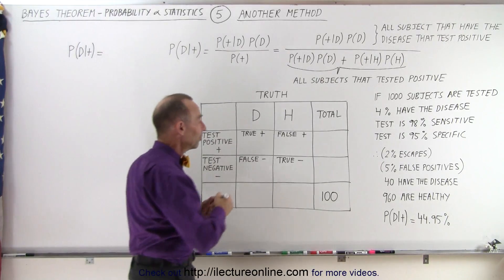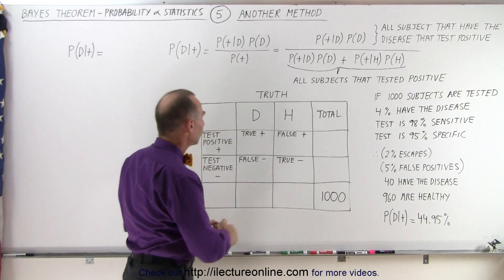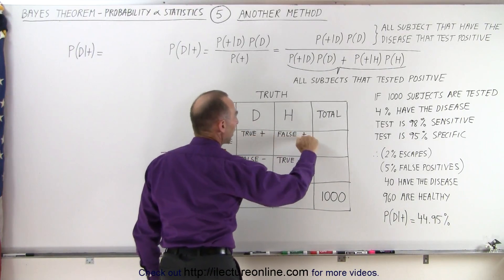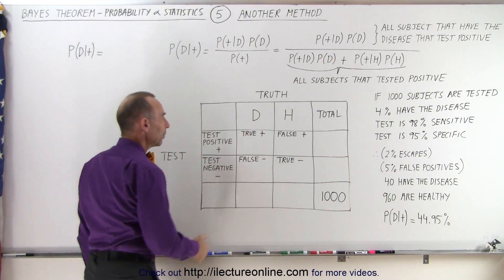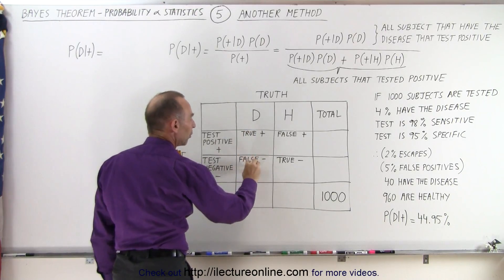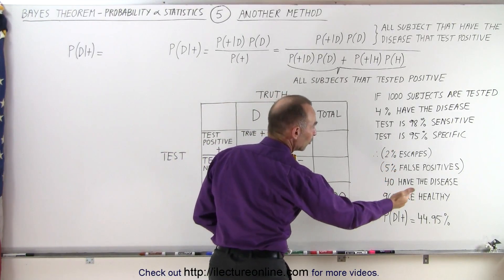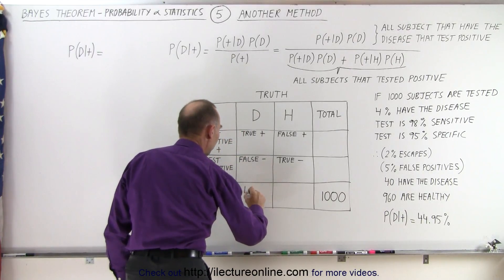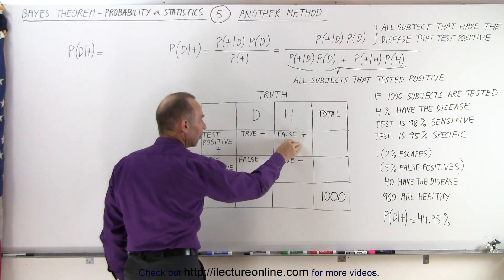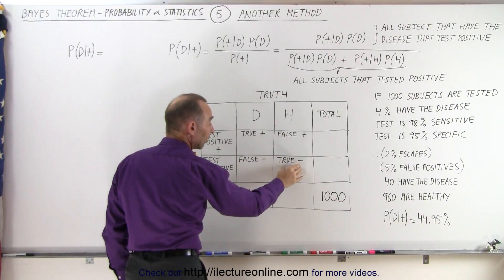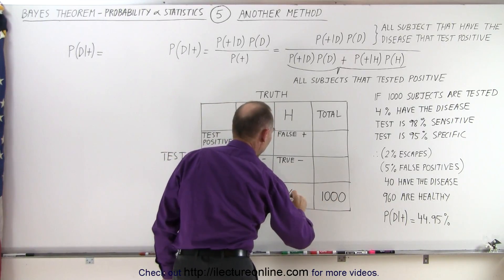We're going to test 8,000 subjects, and that's the total number. Over here we have the total number that test positive and the total number that test negative — those two should add up to 8,000. Here we have all the ones that have the disease: some will test positive, some will test negative, but together they add up to the total number with the disease. Just like in the previous video, there are 40 that have the disease, so these should add up to 40. In the healthy column, those who are false positives and those who are true negatives together add up to 960.